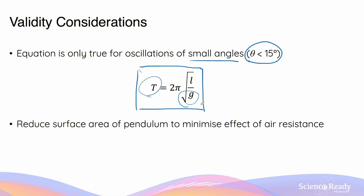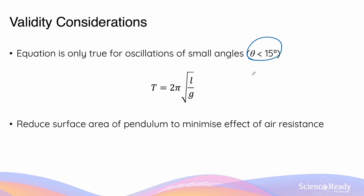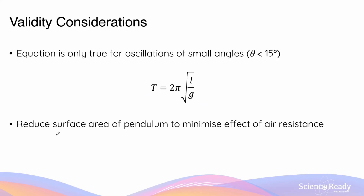Whenever you're using an equation, relationship, or mathematical law in science to address the aim of an experiment, you must research and understand under what conditions that law holds and when it does not. If the angle of oscillation exceeds 15 degrees, the underlying experimental method will not be valid. Additionally, this relationship between period and gravity assumes the only force on the pendulum is gravity. If there are significant other forces — for example, air resistance — this also affects validity, so we should reduce the pendulum's surface area to minimize air resistance.